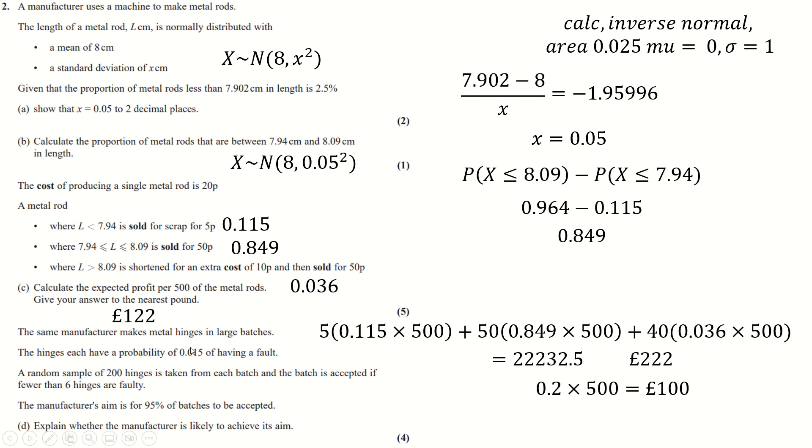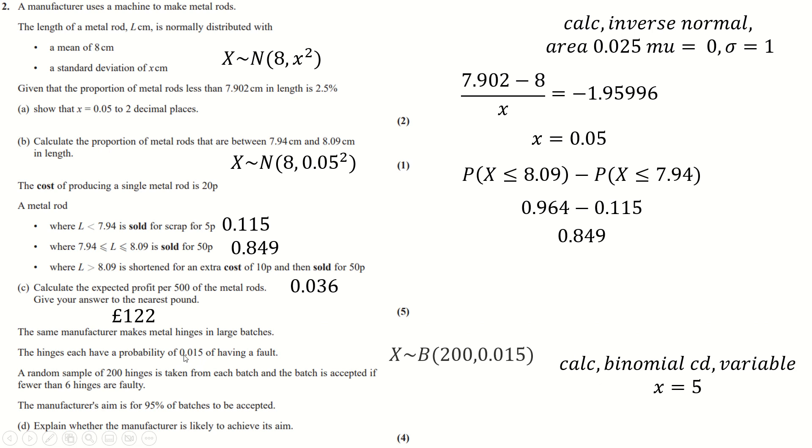The same manufacturer does this in large batches, probability of this having a fault. So we can just do binomial again now. x equals b, n is this, p is that. And we just want to know what the probability of having fewer than 6. So we just need the probability less than or equal to 5. So calculate a binomial CD variable, x is 5, you get this. And so that's the probability of fewer than 6 being faulty, but that's nowhere near the 95% that they want, so it's unlikely that they'll achieve their aim based on this here.